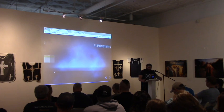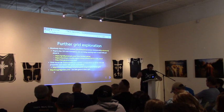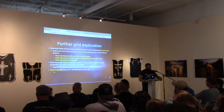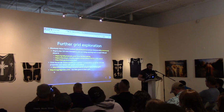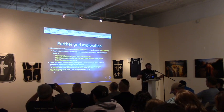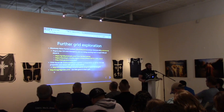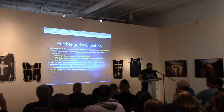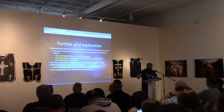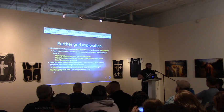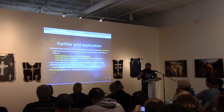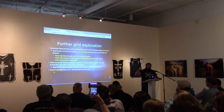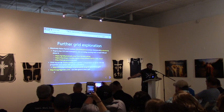Rachel Andrew tweets about Grid all the time and is actively working on various parts of the spec. She'll tweet out when something is changing — for example, the grid-gap property is actually changing. Right now it's called grid-column-gap, but they're changing it to align with CSS columns and just calling it column-gap or row-gap. She has an awesome site called gridbyexample.com.